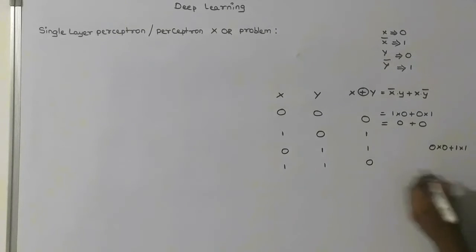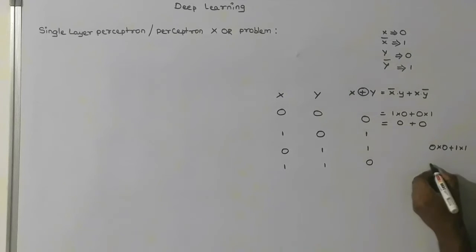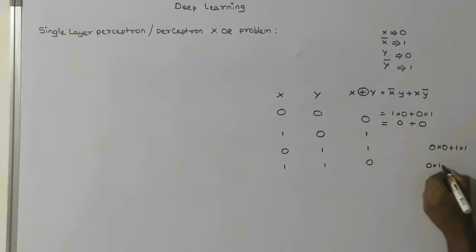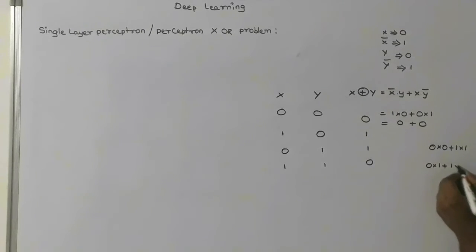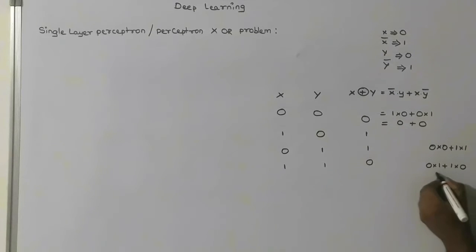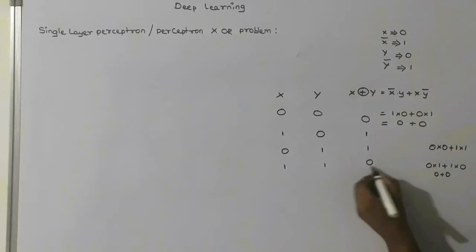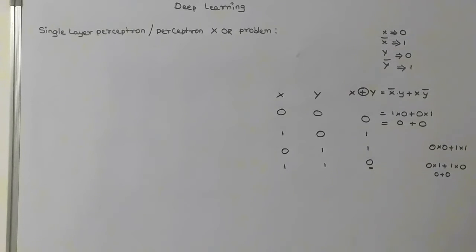Let us see how the case (1,1) gives 0. When x is 1, x-bar is 0. So x-bar into y is 0 into 1, plus x into y-bar is 1 into 0 — since y is 1, y-bar is 0. So that is 0 into 1 equals 0, plus 1 into 0 equals 0. So the XOR result for (1,1) is 0.